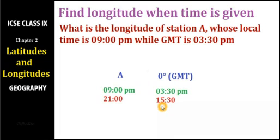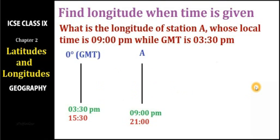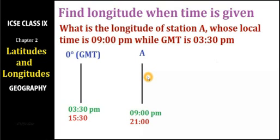The second important step is arranging the stations in the correct geographical order. The time of station A is 21 hours and GMT is 15 hours 30 minutes, meaning station A is located to the east of zero degrees longitude. The earth rotates from west to east, so the time of a place in the east will always be ahead of a place in the west. We place both stations in the correct order, with the eastern place ahead.